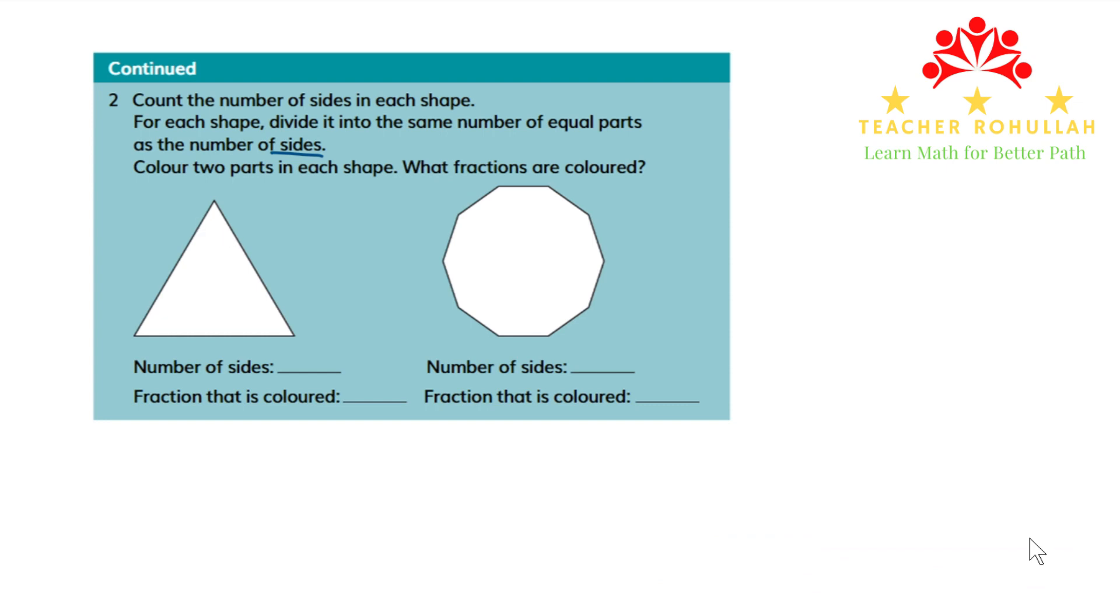For the triangle, we have three parts. So we divide it into three equal parts. Let me divide. Now it's asking us to color two of the equal parts. Let me color this one, this one, and this one. We have three sides. What fraction is made now? The fraction is two-thirds, meaning out of three equal parts, two of them are shaded.